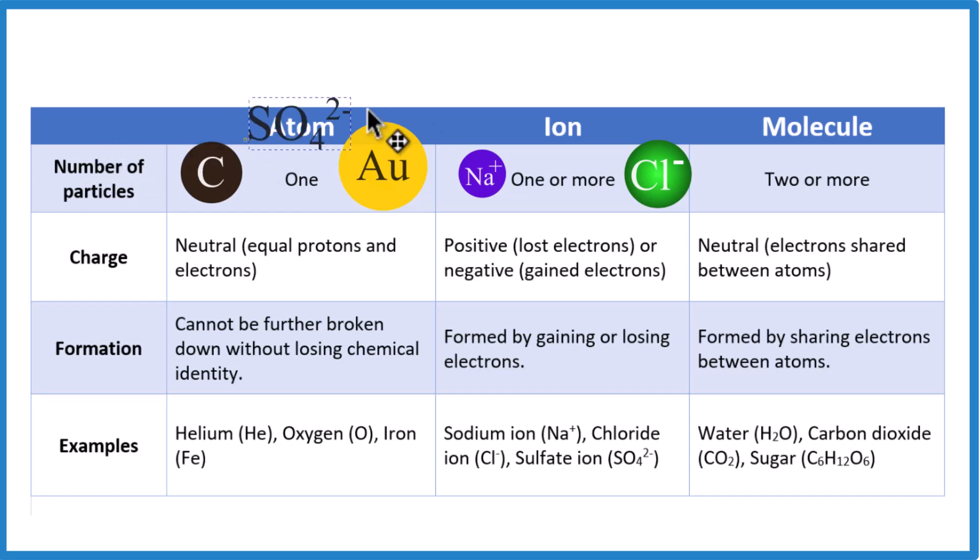For example, the sulfate ion. SO4, 2 minus. We've got a sulfur with four oxygen atoms bonded together. And that negative 2 here, that's what makes it an ion. And that negative 2 goes to the whole ion here. What that means is it has two extra electrons.